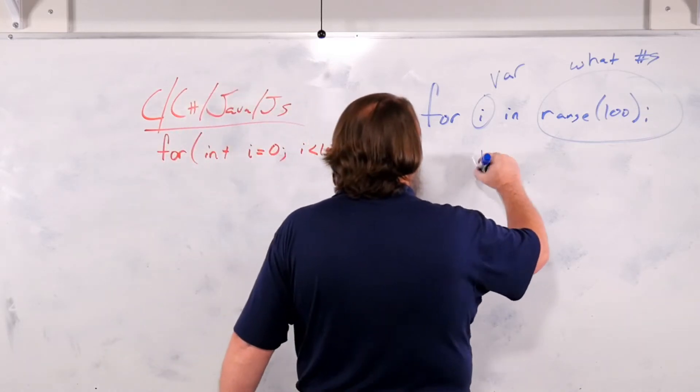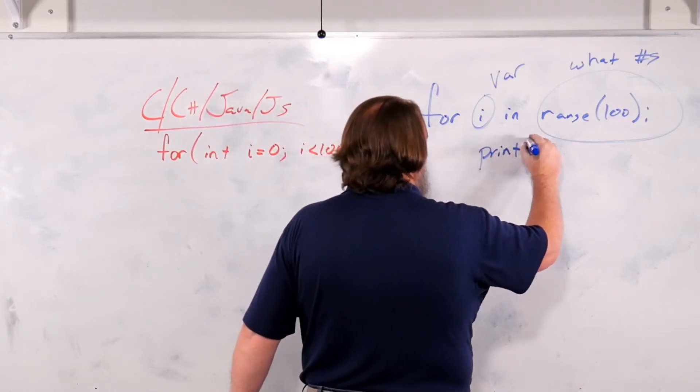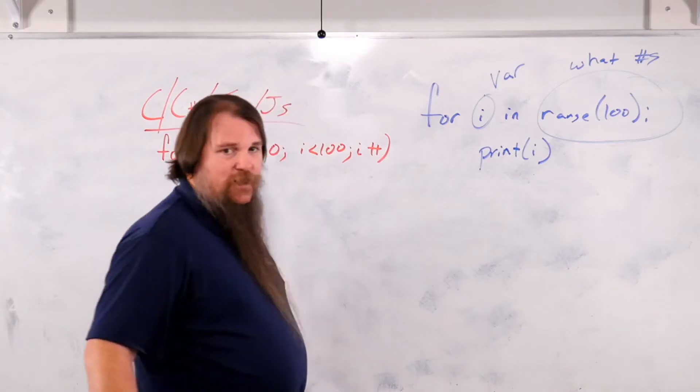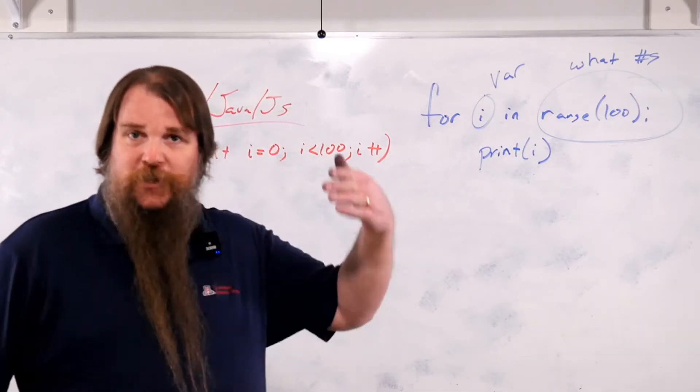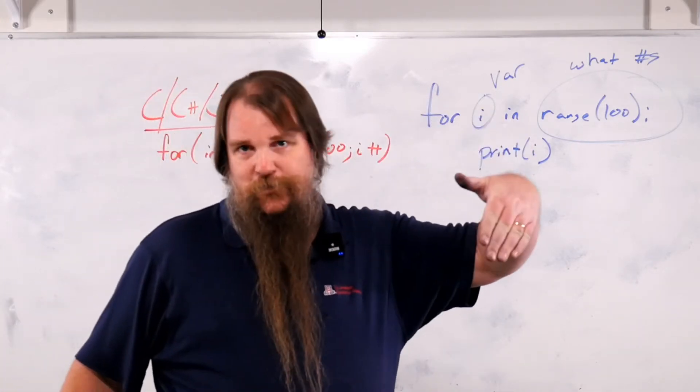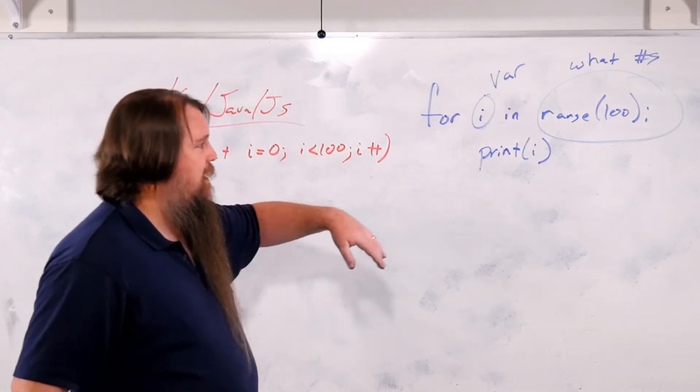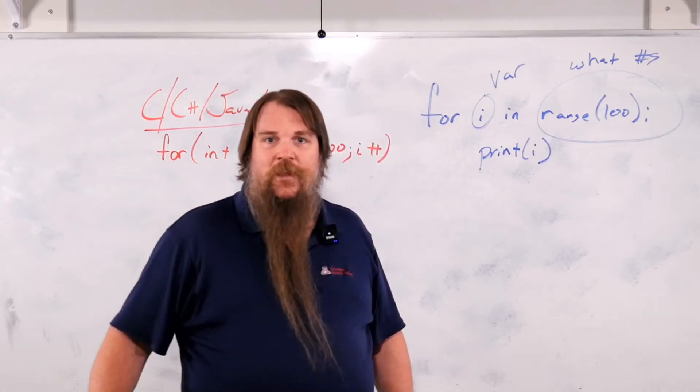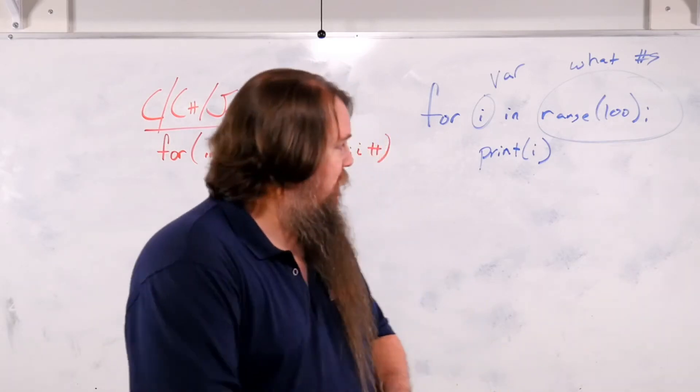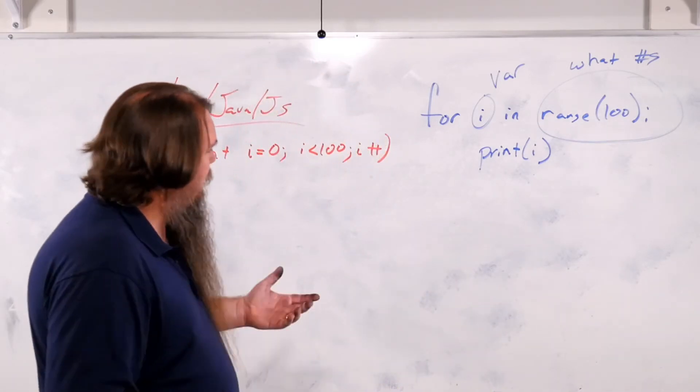So if we say print i in the body of the loop, then this will print 0, and then on the next line it will print 1, then 2, 3, 4, all the way up to 99, but will not print 100. That's the essence of a loop in Python.